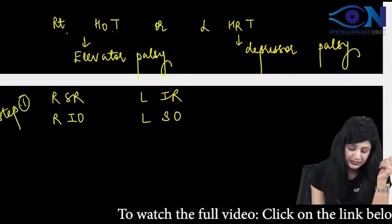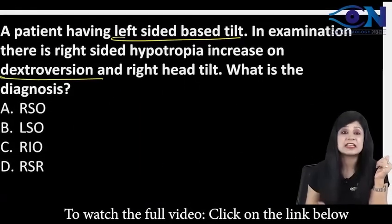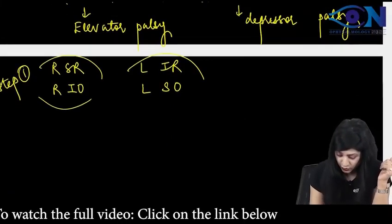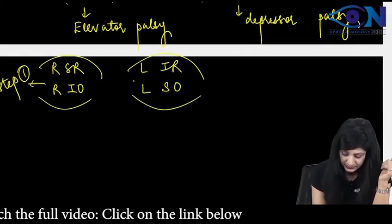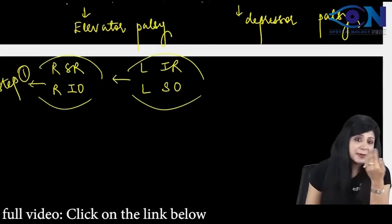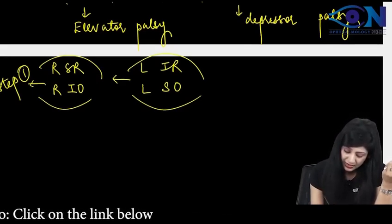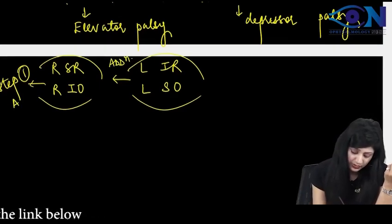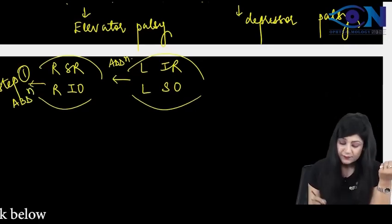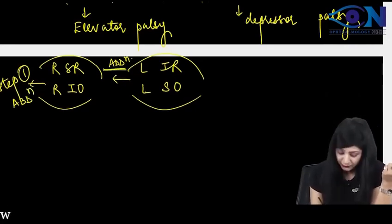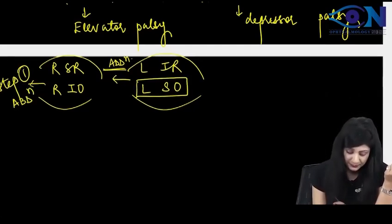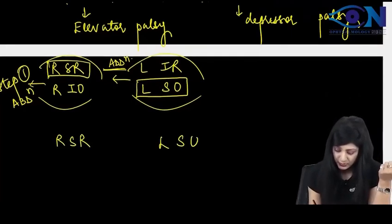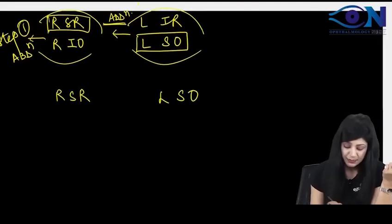Now apply step number two. Step number two says that it is increasing in dextroversion. Try to do dextroversion now. When the patient is trying to look towards right side, this eye will do adduction and this eye will do abduction. In the adducting eye, we have to choose the oblique. In the abducting eye, I have to choose the rectus. So, right superior rectus or left superior oblique. This is your step number two.